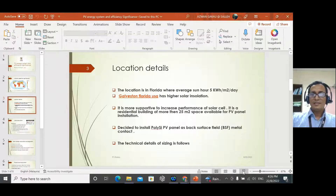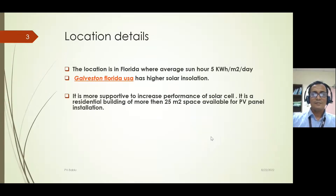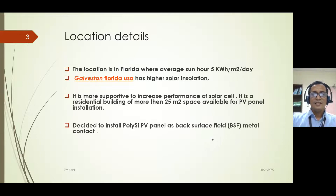Higher insolation has a direct impact on power generation — it is more supportive in increasing the performance of a solar cell. We consider a residential building with 25 meter square space available for PV installation. Polysilicon panels with back surface field contact type and efficiency around 14% will be discussed in detail later.